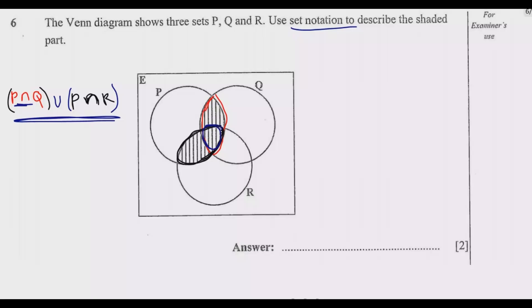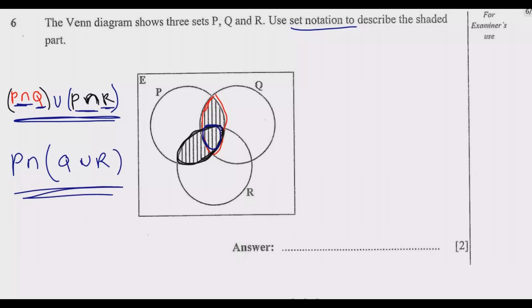You can simplify this using the distributive law of sets. Since P intersection appears in both parts, we can factor it out. This gives us P intersection, then Q union R — written as P ∩ (Q ∪ R). This is the simplified version which is what is expected of you.